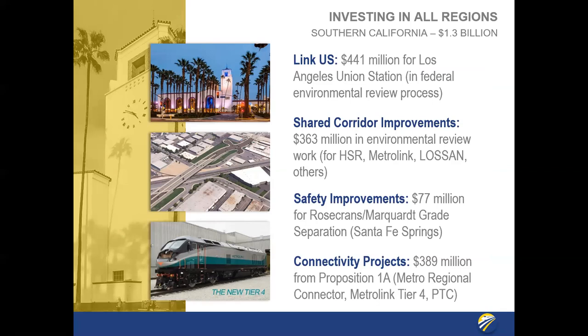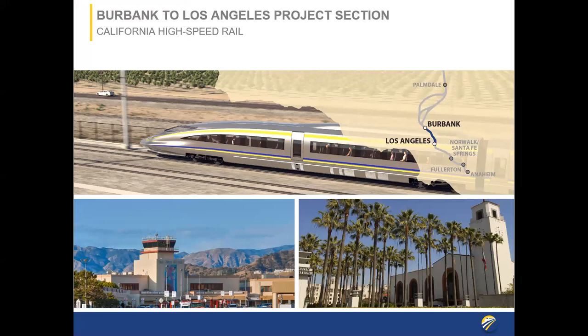Some highlights of Southern California projects making up the $1.3 billion include: Link US — $441 million for Union Station's run-through project; shared corridor improvements — $363 million for high speed rail, Metrolink, and Lossan; safety improvements — $77 million for the Rosecrans-Marquardt grade separation project; and connectivity projects including $389 million for Prop 1A for the Regional Connector project, Metrolink Tier 4 locomotives, and the positive train control project.